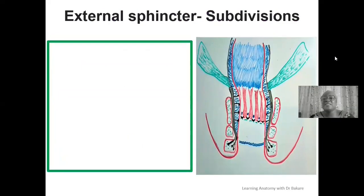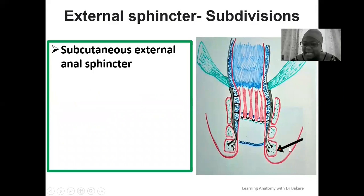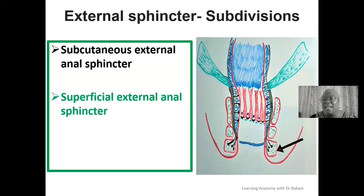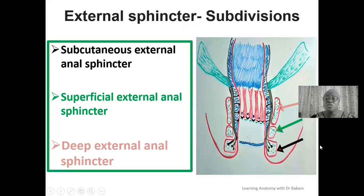The external anal sphincter is subdivided into three subparts — it is a three-in-one sphincter. We have the subcutaneous external anal sphincter, located close to the skin. Deep to that, we have the superficial external anal sphincter. And deep to the superficial, we have the deep external anal sphincter. In an exam, remember: subcutaneous, superficial, and deep external anal sphincters.